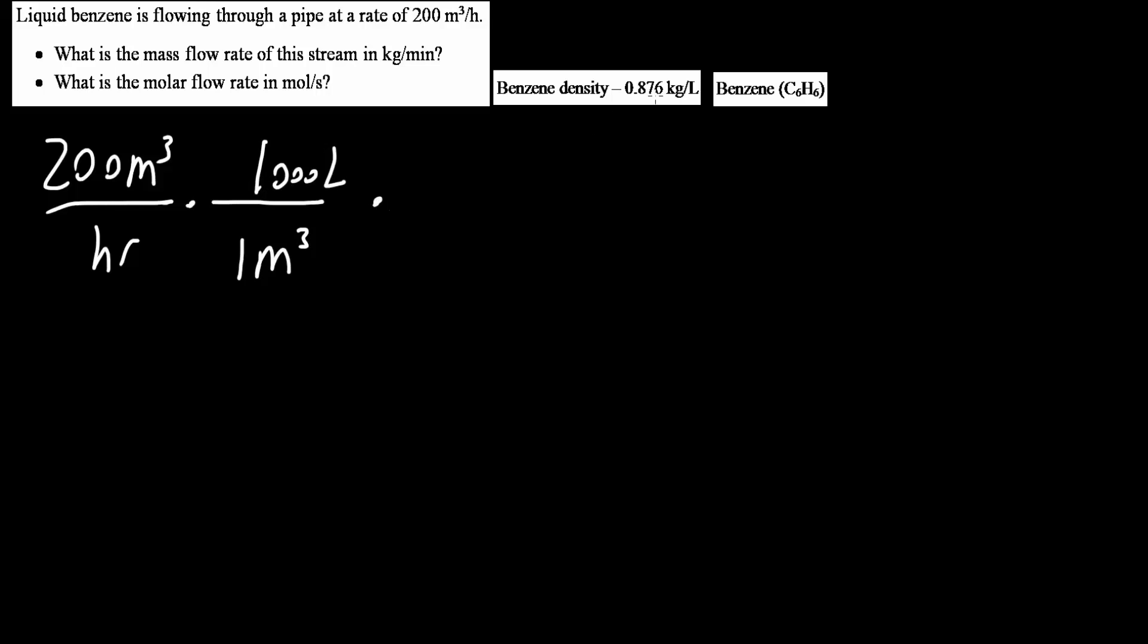By doing this we can use our density. So we know that one liter is 0.876 kilograms. So now we have the kilogram.